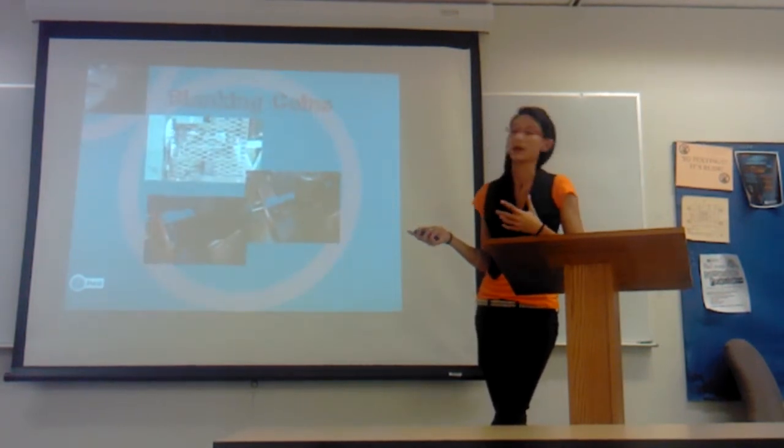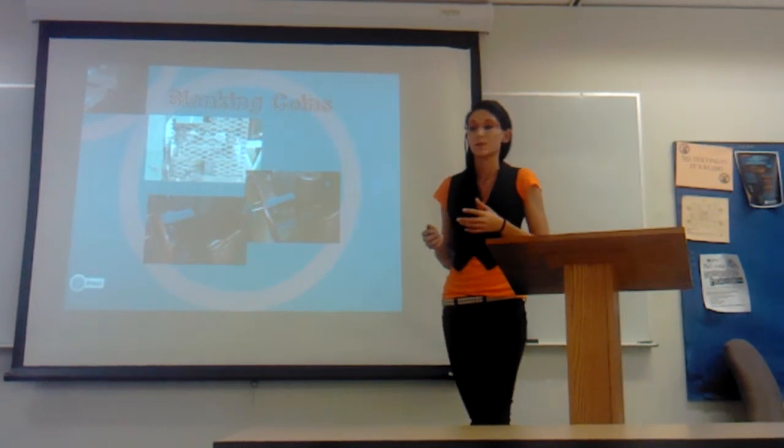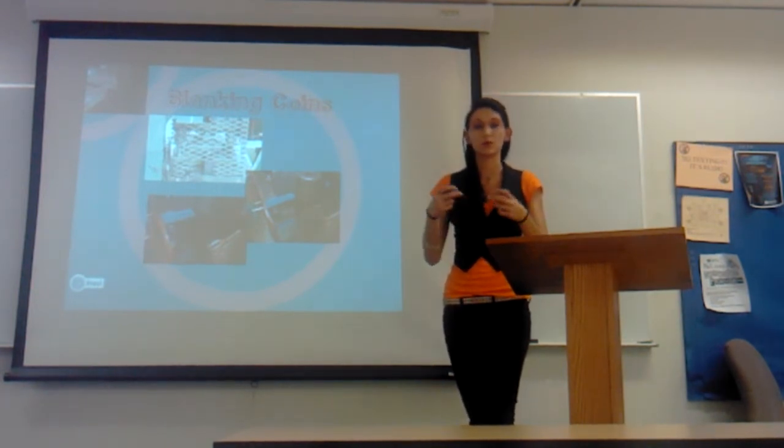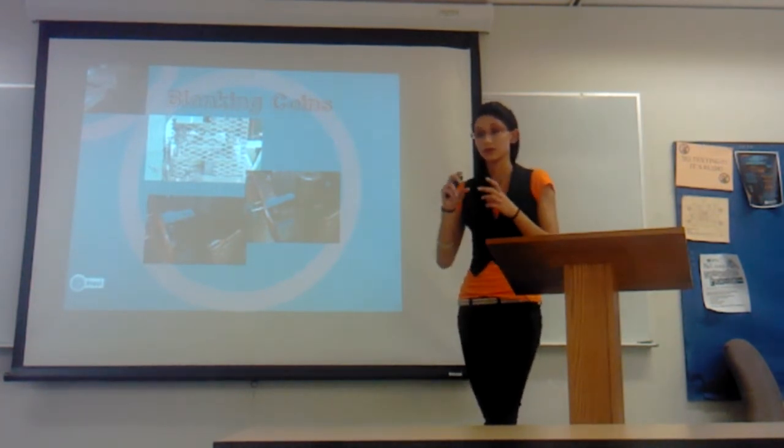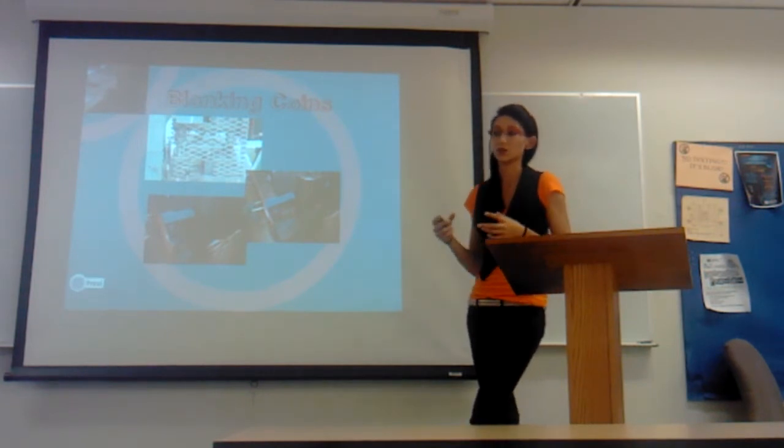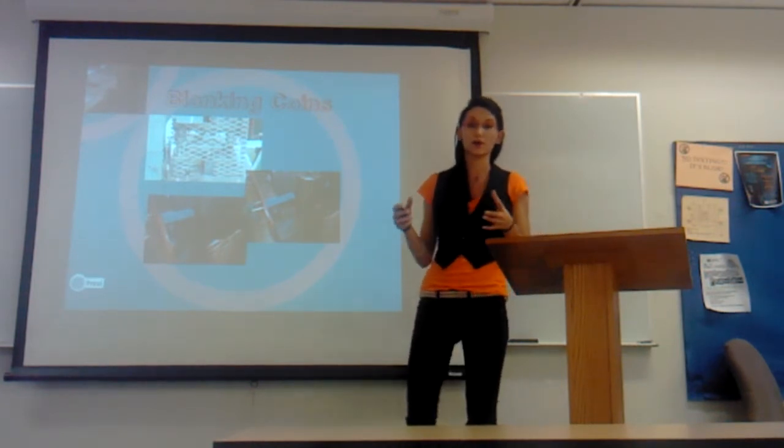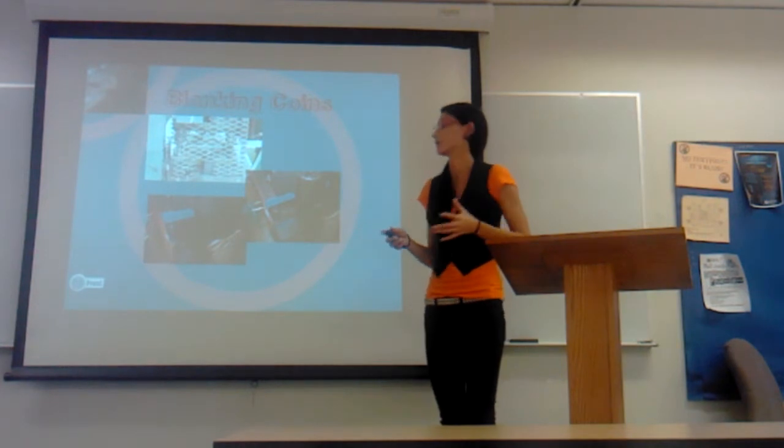We then go to blanking. Blanking is stamping of the coin without an image. We have now decided the diameter and we're now deciding the shape. We can do anything from rectangles, squares, circles, anything the customer desires.